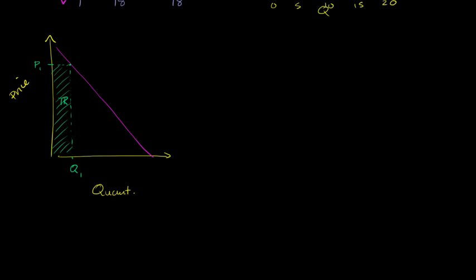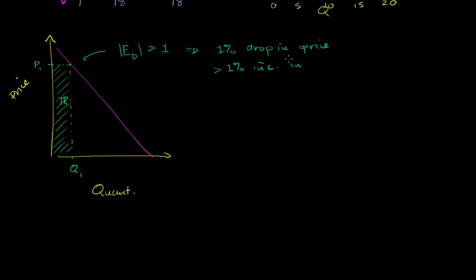Now let's assume in this part of the curve that the price elasticity of demand is greater than 1. So we are elastic. The absolute value of the elasticity of demand — it will actually be a negative number — but the absolute value of the elasticity of demand is greater than 1, which means for a 1% drop in price, you have a greater than 1% increase in quantity. That comes straight out of the formula for what elasticity is: elasticity is our percent change in quantity over percent change in price.